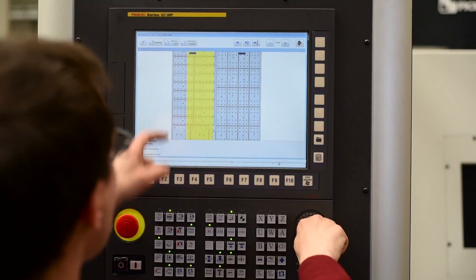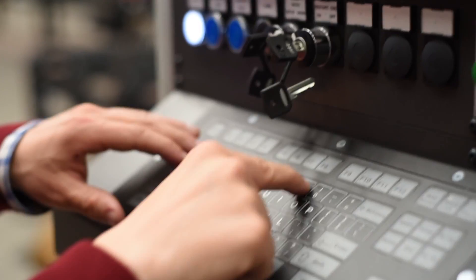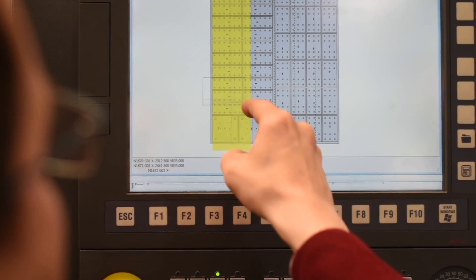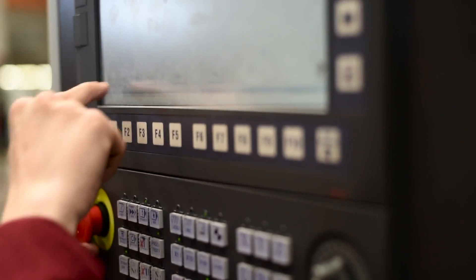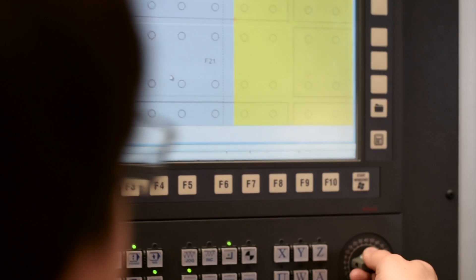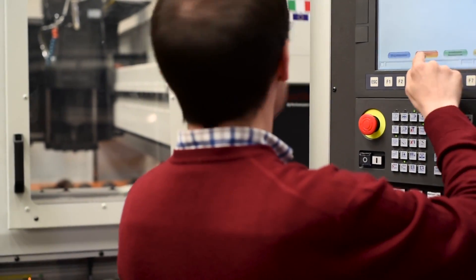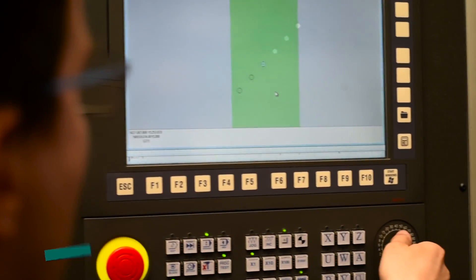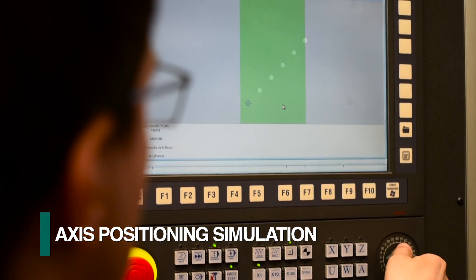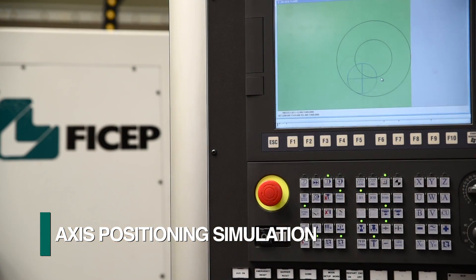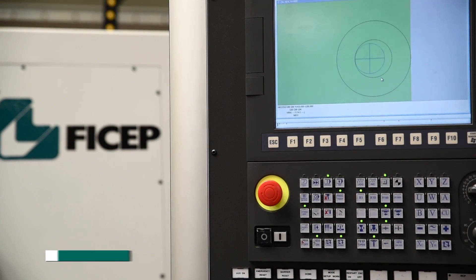FeChep's proprietary nesting software maximizes material utilization and the efficiency of operations, as it is designed specifically for FeChep's family of plate processing systems. Functions can be simulated or viewed by the operator on the CNC for automated routines such as counterboring.